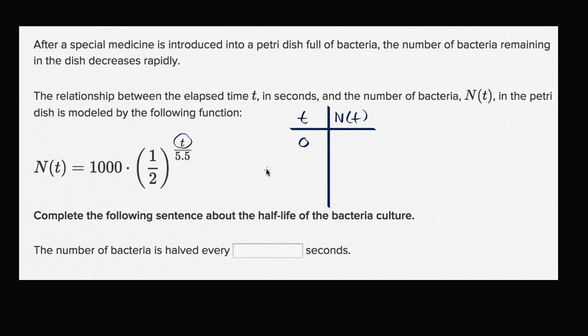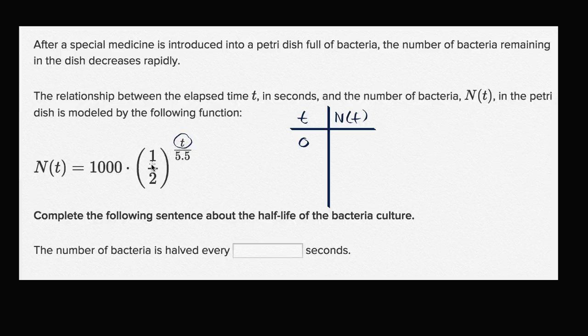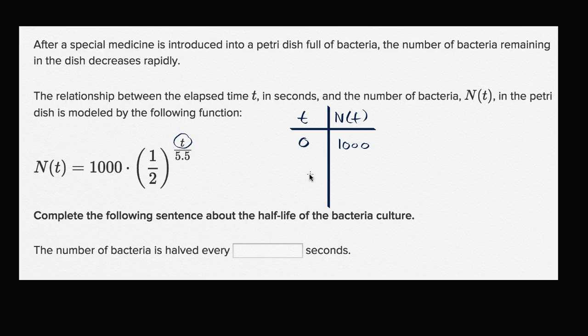At time equals zero, right when we start, if this t is zero, then one-half to the zero over 5.5 power, that's just one-half to the zero, that's all gonna be one, and you're just gonna be left with 1,000 bacteria in the petri dish.